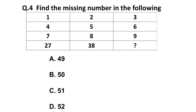Question 4: Find the missing number in the matrix. Looking across each row — column 1: 4 × 7 = 28, minus 1 = 27; column 2: 5 × 8 = 40, minus 2 = 38; column 3: 6 × 9 = 54, minus 3 = 51. So the correct answer is 51. If there is any doubt, comment in the comment section.